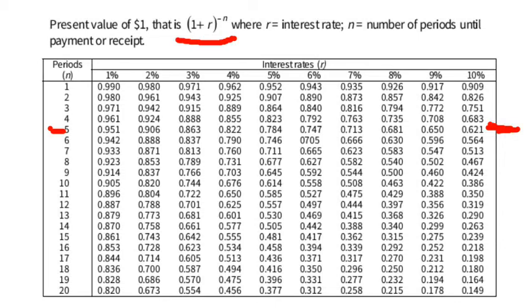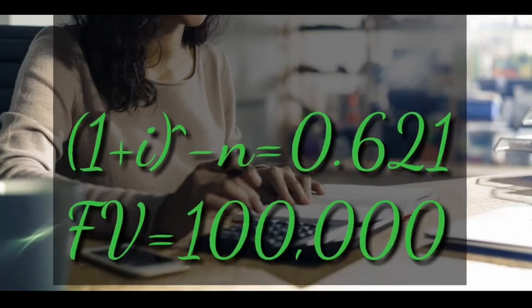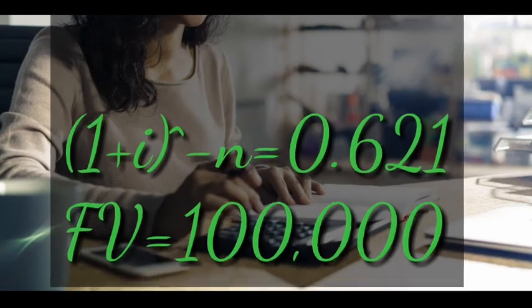We come to the column of periods and spot where 5 is — it's there. Then we go to the row of the interest rate and find where 10% is. We slide down to where 5 is, and the figure where they match is the present value interest factor we are looking for, which is 0.621.